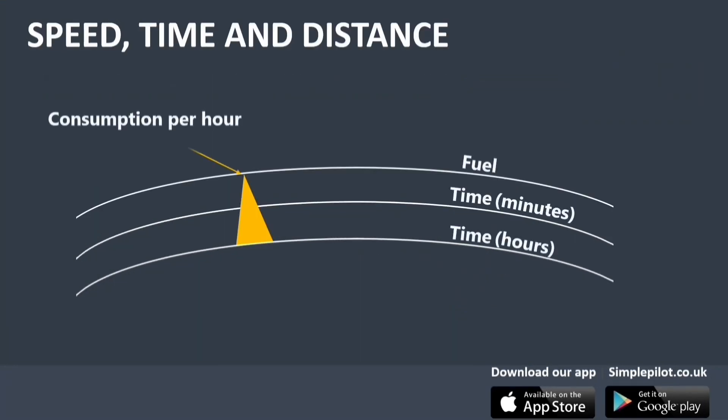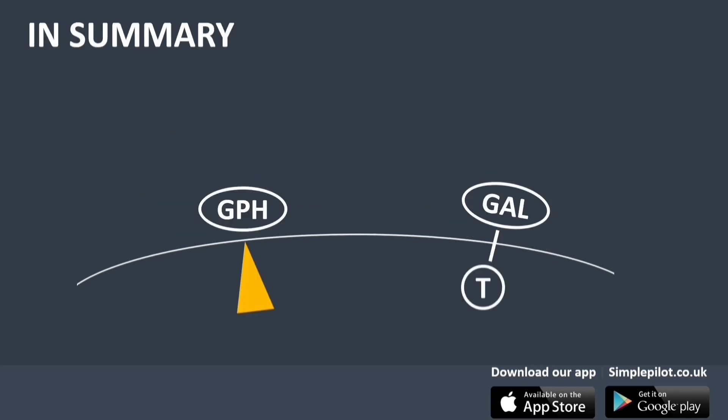Let's continue with fuel consumption calculations, which are very similar to the time, distance, and speed calculations. The consumption per hour is represented on the outer scale by the speed index, the fuel is on the outer scale, and time is on the middle and inner scales. We can confirm the result using the conventional formula. This procedure applies regardless of the unit of measurement — gallons per hour, kilograms per hour, or pounds per hour.